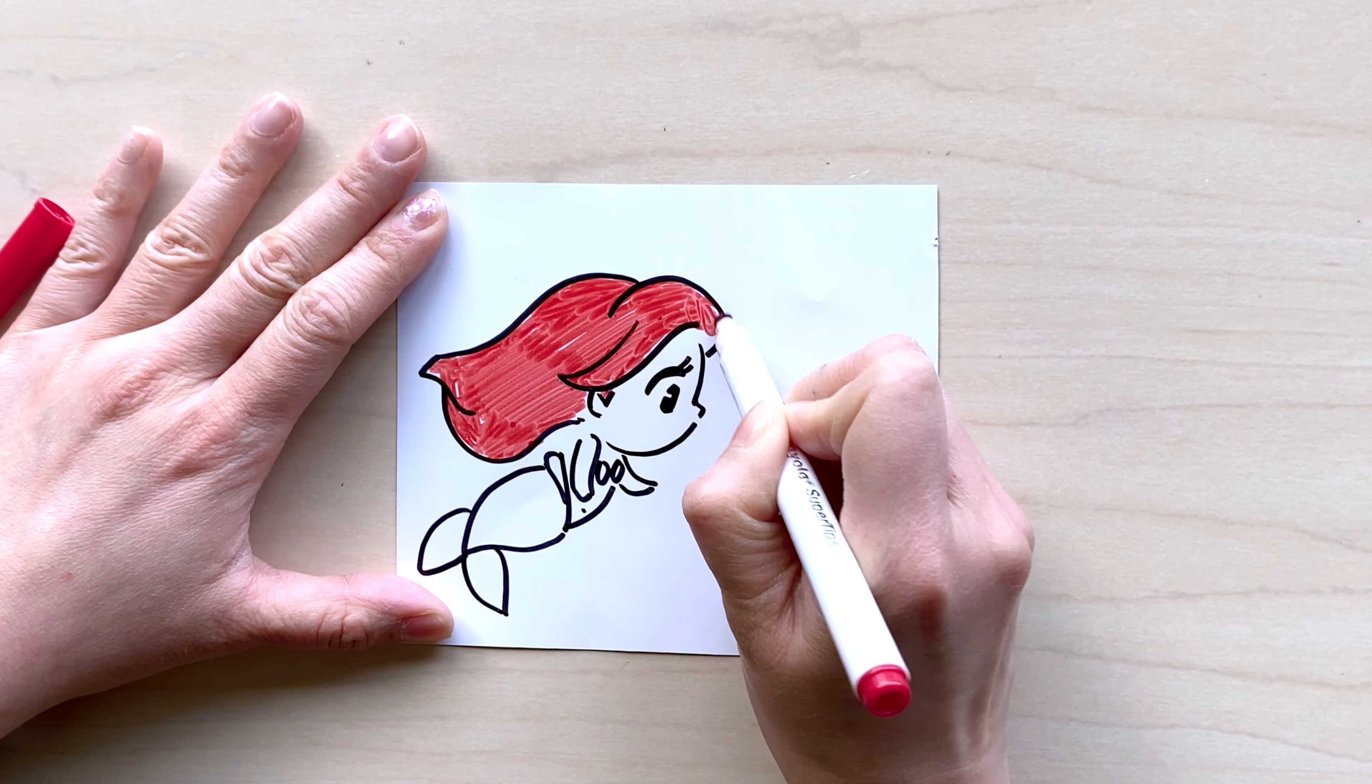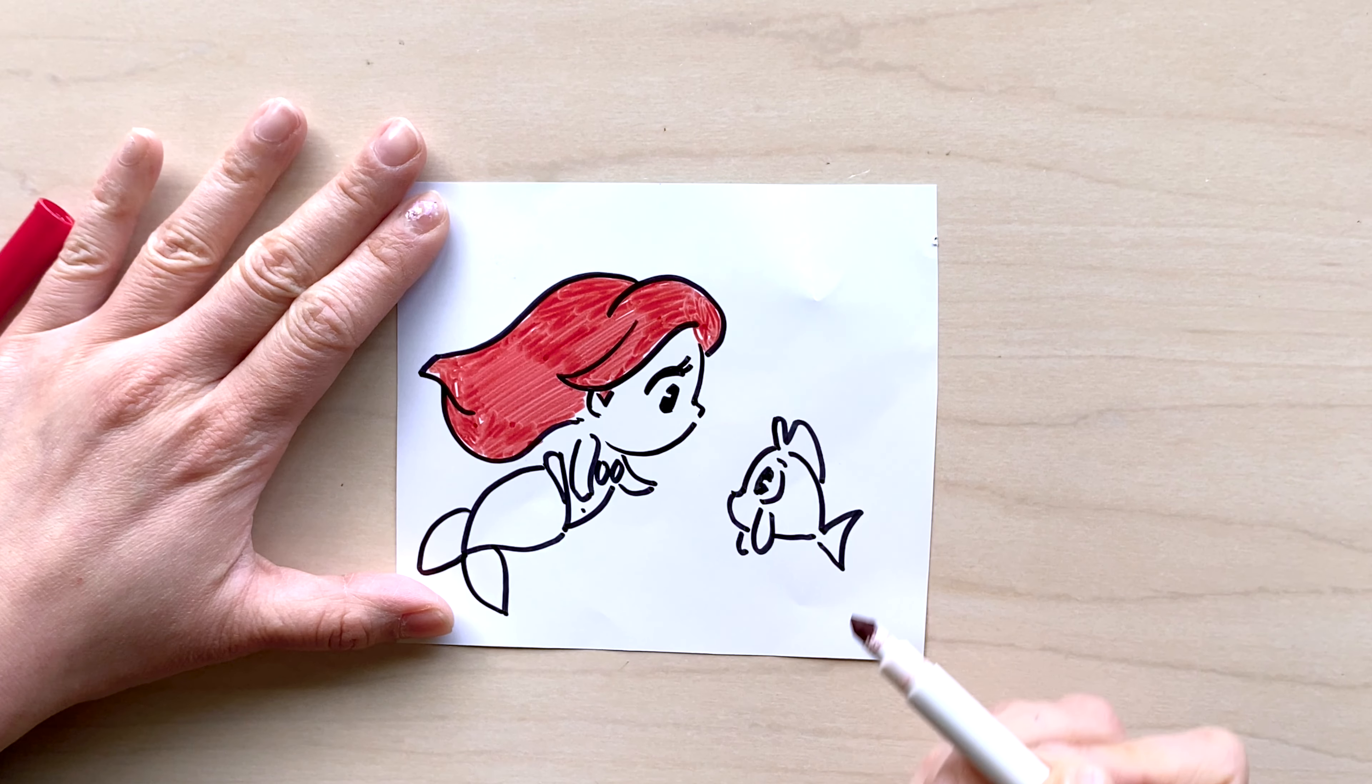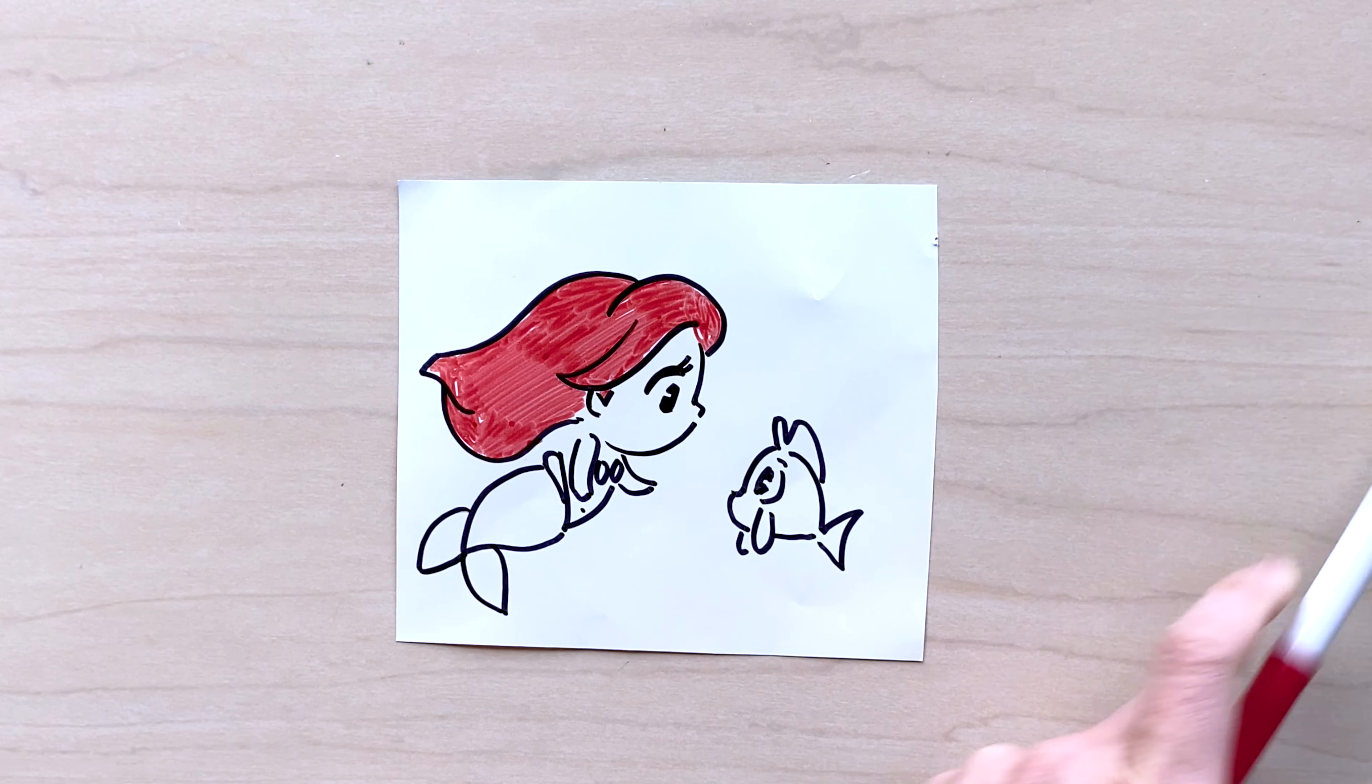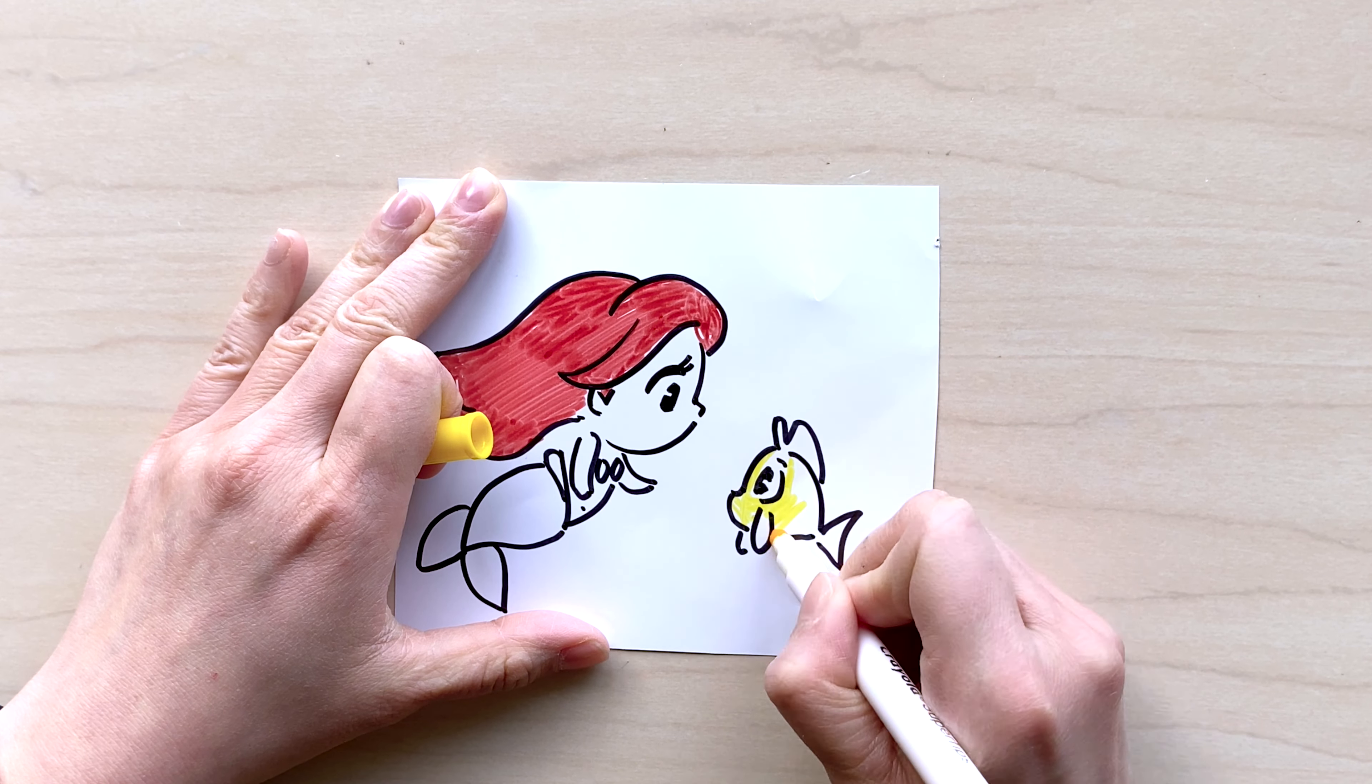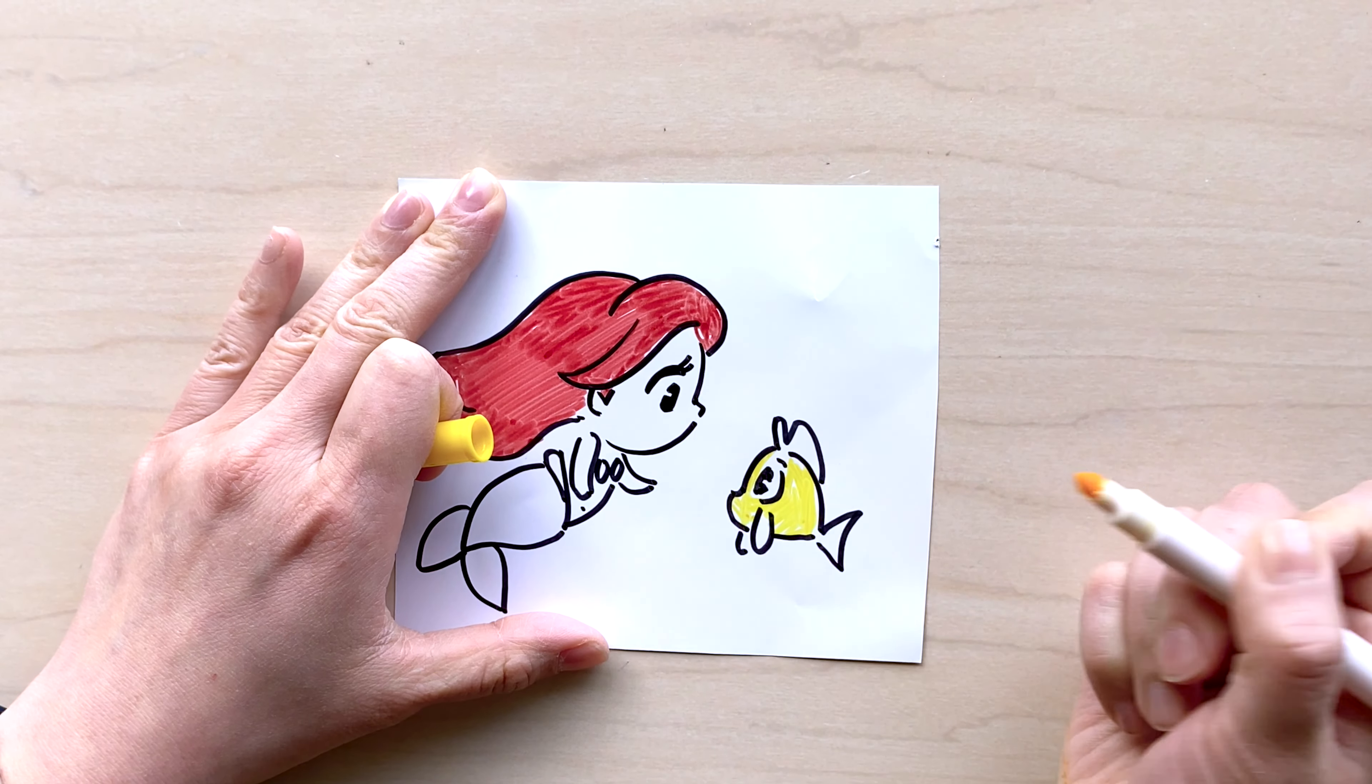Before I start drawing, I usually like to line up all the markers of colors that I plan on using. It's kind of like cooking—when you're cooking, you want to get all your ingredients ready before starting cooking. So for drawing, I like to get all my materials ready, including the colors. So for this drawing, I know I need some yellow for Flounder, I need some red for her hair, and I probably need some apricot, like light apricot color for Ariel's skin, and then a color for her tail as well as for her seashells.